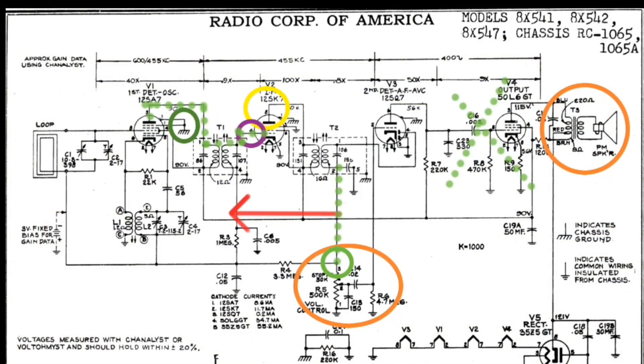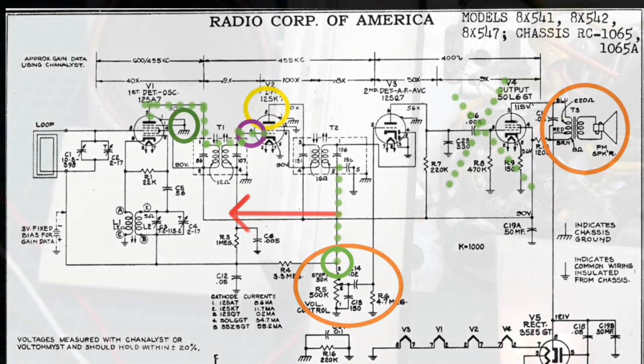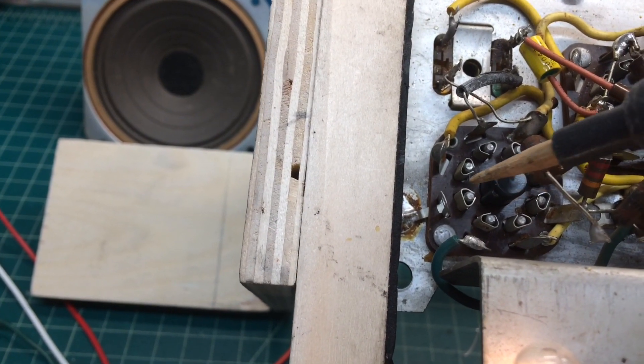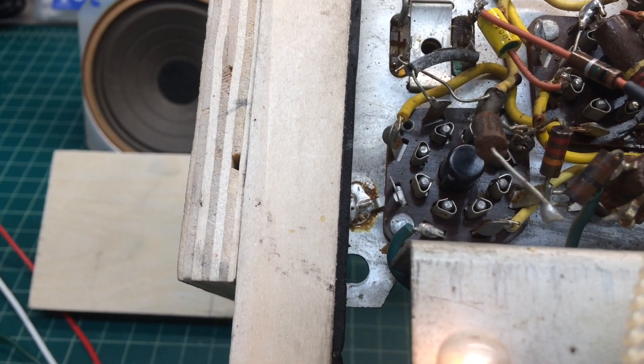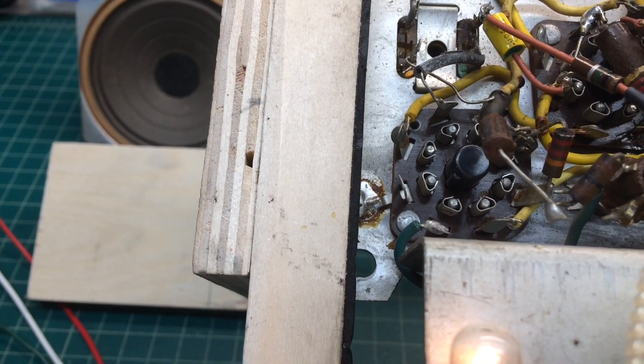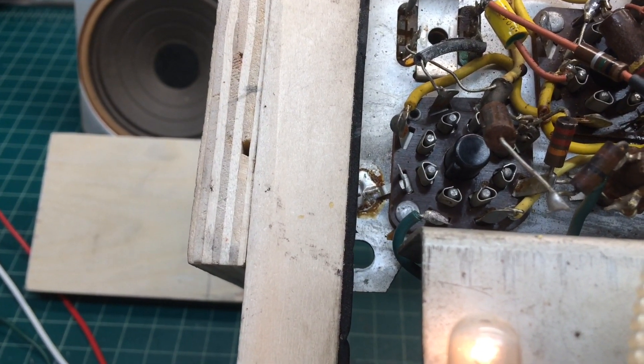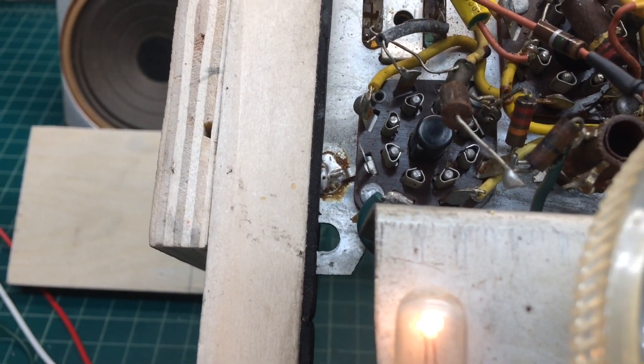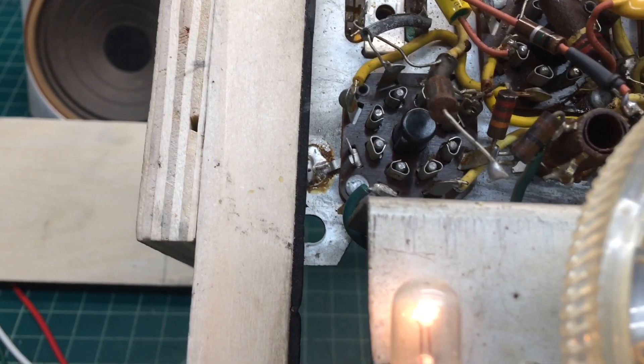Let me take a closer look here at the grounding location back to chassis for pin one on the 12SA7, just to make certain that we don't have an issue there. That pin one is grounded back to the chassis and I threw my meter on it here, just to make sure that we had a good solder joint and everything looks fine.